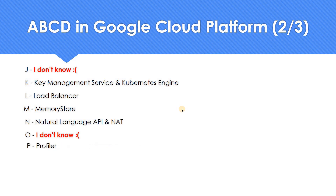Moving on to P. Under Operations — previously called Stackdriver — there's a product or sub-product called Profiler. This can be really helpful for developers to know where memory leaks are happening in their application. It's a really handy tool. If you're a developer, this is something you can use extensively.